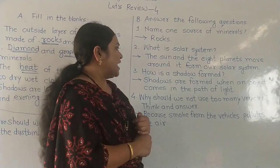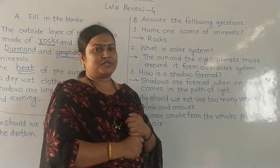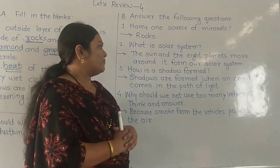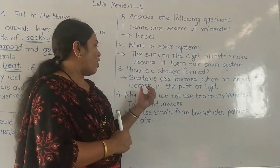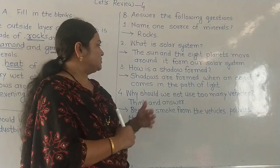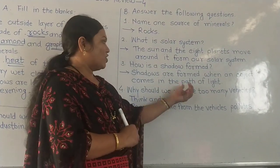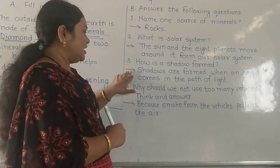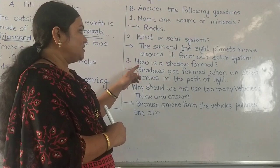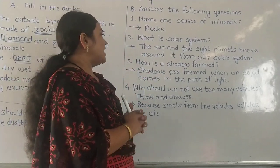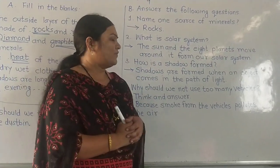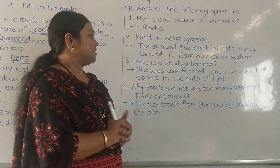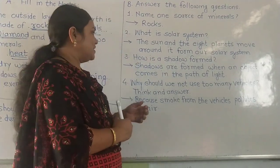Question number 3: how is a shadow formed? Shadows are formed when an object comes in the path of light.